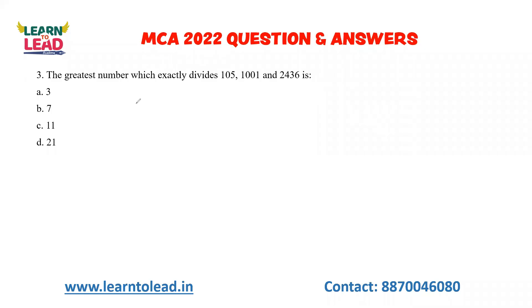Next question: the greatest number which exactly divides 105, 1001, 2436. Here you are finding the HCF. Now, you can use another method — check divisibility. For divisibility by 3, if the sum of digits is a multiple of 3, the number is divisible.